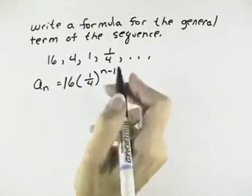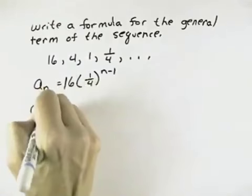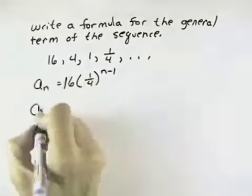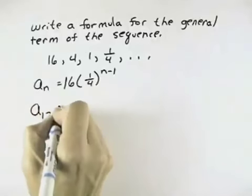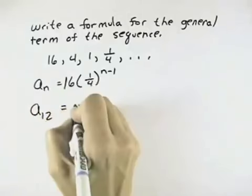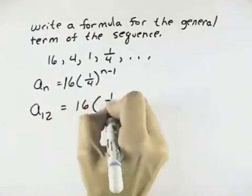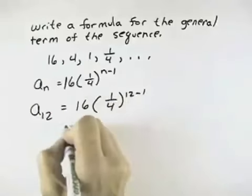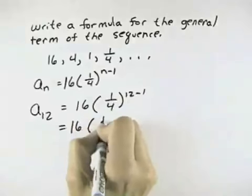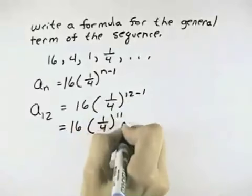And then I was also asked in this problem to find the 12th term. So I want a sub 12 instead of a sub n. So that means n equals 12. So I'd have 16, and I'd have 1/4 to the 12 minus 1. So that's going to be 16 times 1/4 to the 11th power.